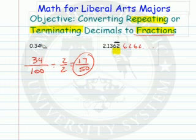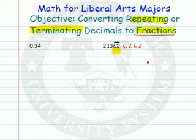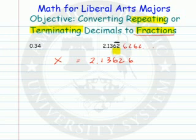So that's easy to convert a terminating decimal. How about a repeating one? There are two big steps. We're going to change this now to a fraction. So right now, x is equal to my number: 2.136262 62 and so forth.